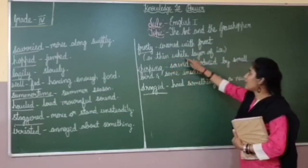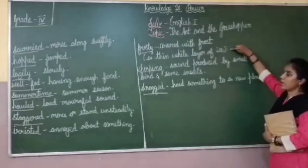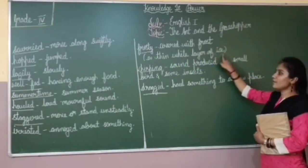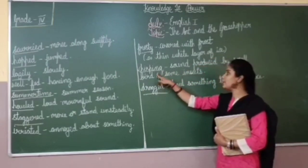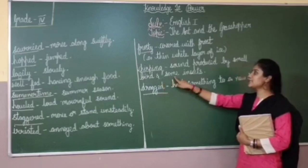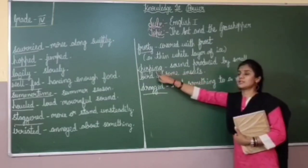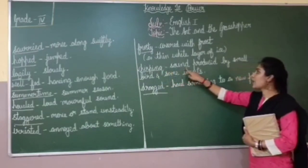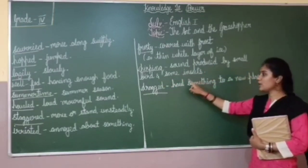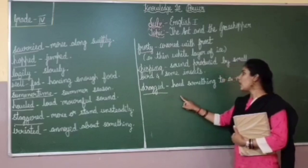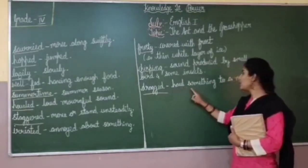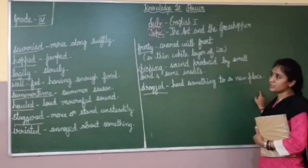Frosty also means a thin white layer of ice. Chirping means sound produced by a small bird and some insects. Drag means to pull something to a new place.